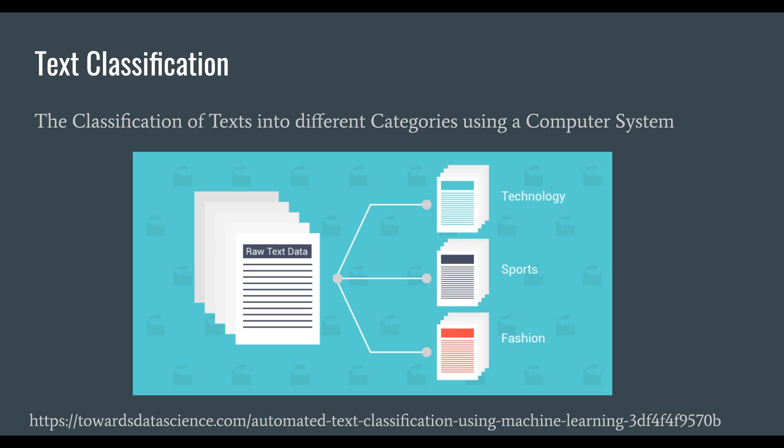So, text classification — what is it? Text classification is the classification of texts into different categories using a computer system. We give a computer system raw text data and it assigns different classes, categories, or topics to that document with varying degrees of percentage. For example, if something is highly technological, it might be 90% tech, but if that tech is used to understand a baseball match, it could be 5% sports and maybe 0.001% fashion — so mostly a tech-based article.